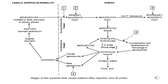In the liver, schizonts mature and convert into merozoites, which then travel to the blood and enter erythrocytes. In the erythrocyte, they multiply and develop into merozoites or gametocytes. Merozoites can re-enter erythrocytes and further multiply. When erythrocytes rupture, the patient feels chills and fever. Gametocytes — both male and female — return to the female Anopheles mosquito when it bites a malaria-infected patient, continuing the cycle.